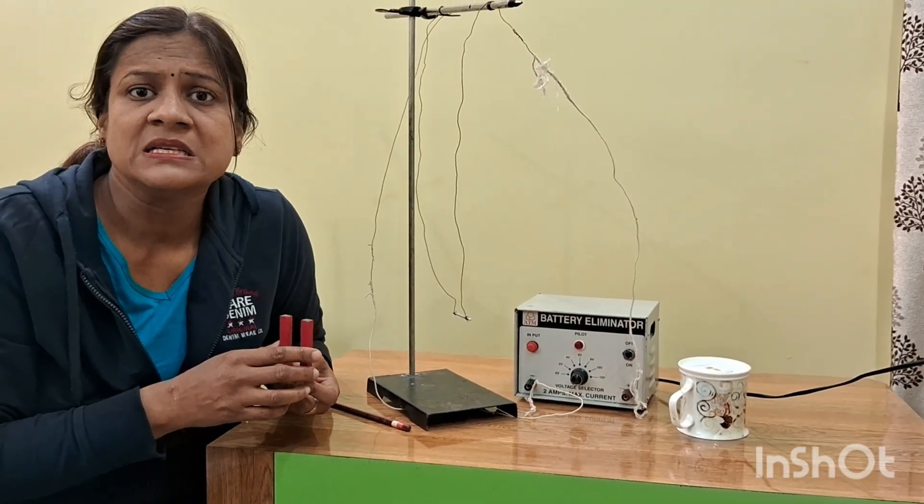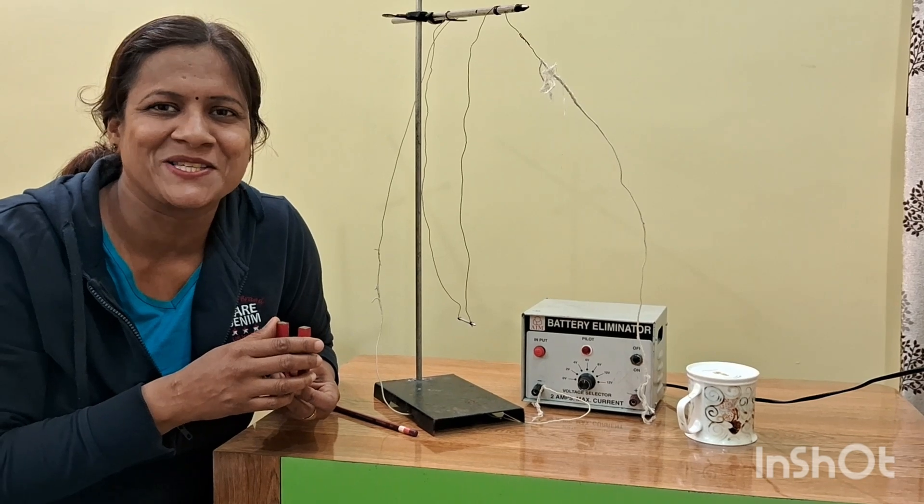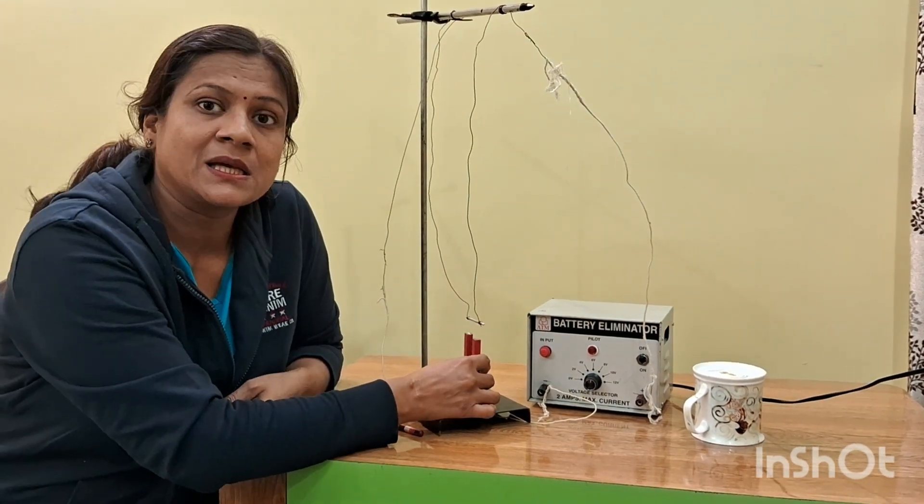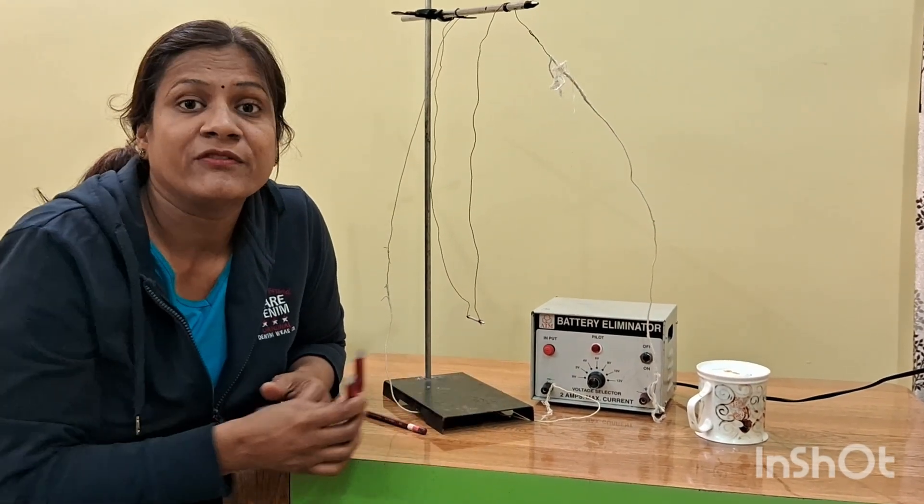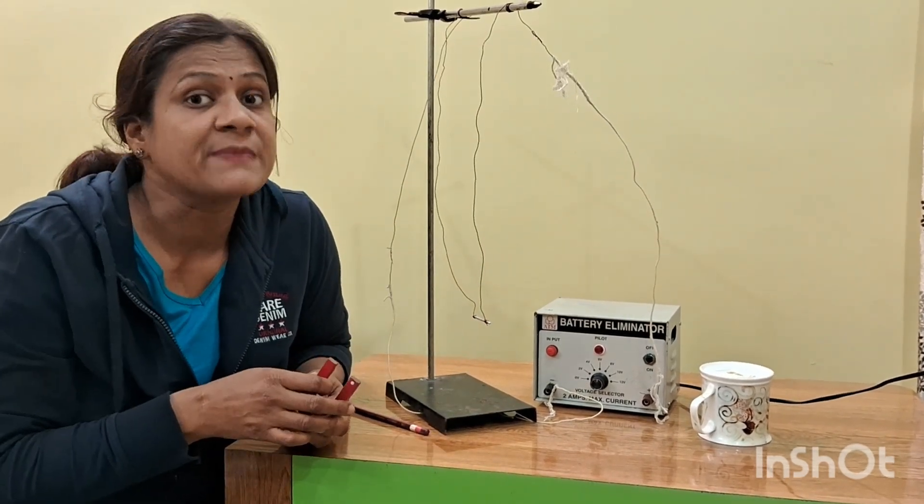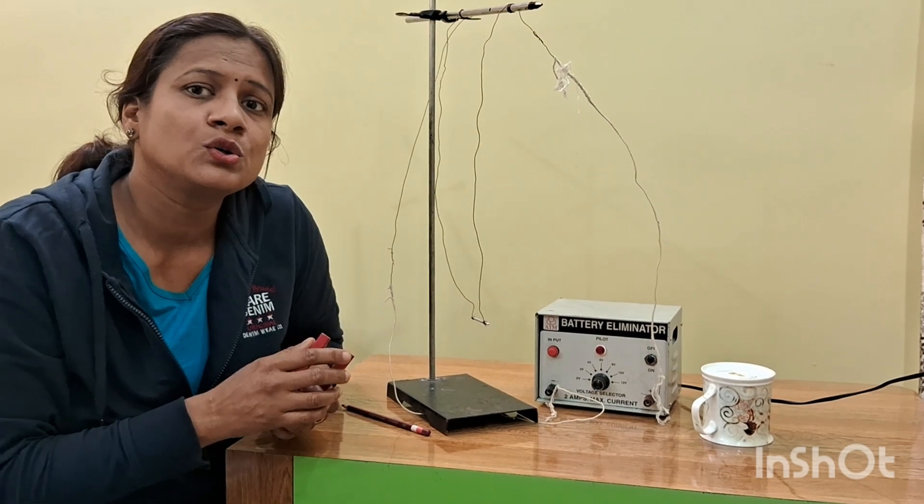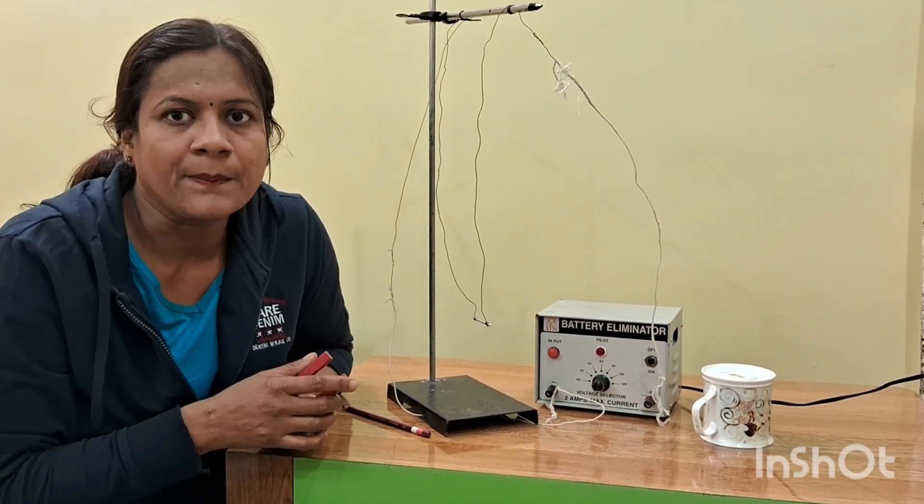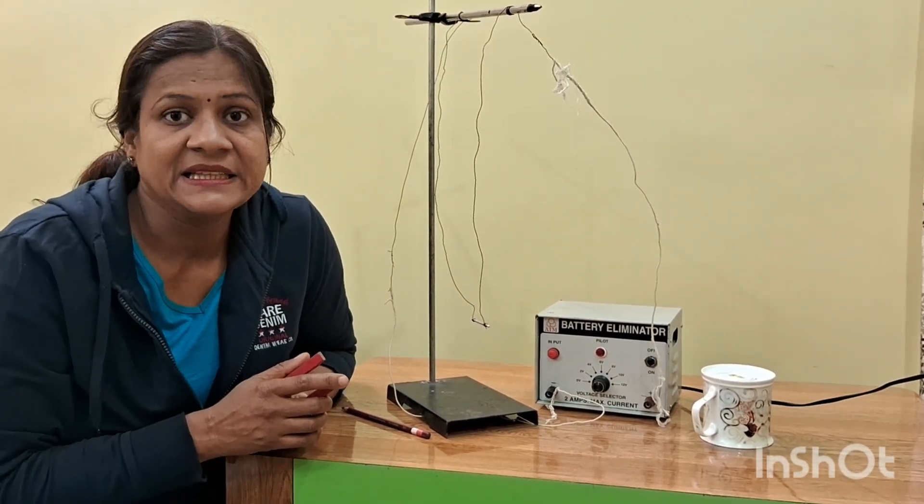Because it depends upon sin theta and sin 0 is 0. So if these two are making 0 degree angle, there will be no force and sin 90 is maximum. So when it is perpendicular, it is maximum. When it changes from 0 to 90, the force will depend upon the factor sin theta.